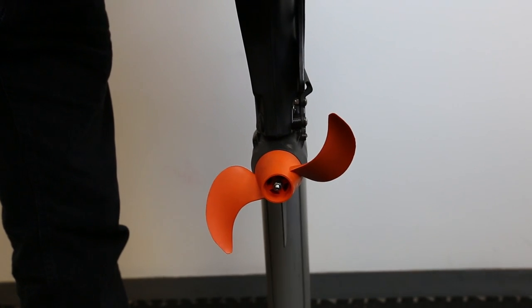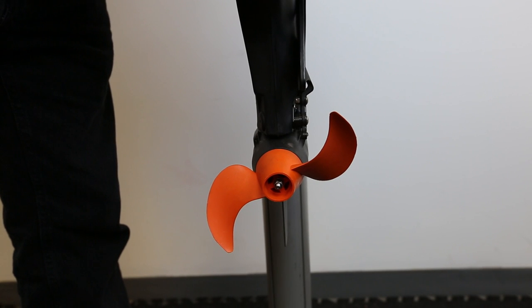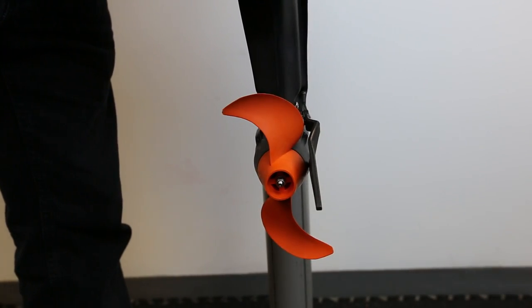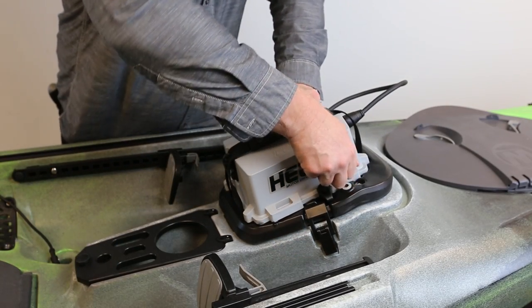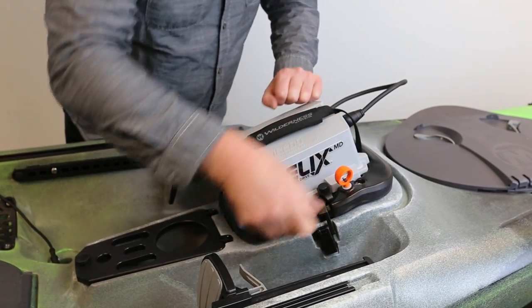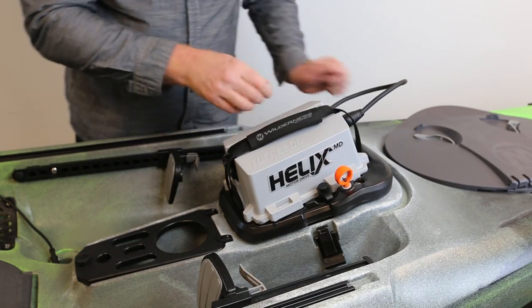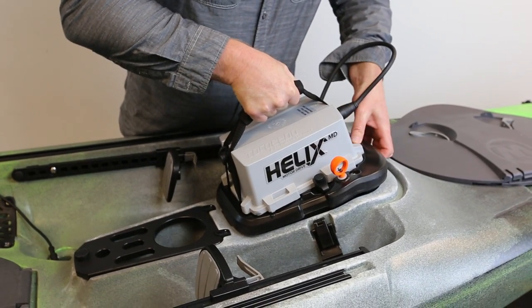It's good to understand the prop alignment. The prop alignment system is designed to align the propeller into the vertical position for removal from the pod scupper. Before removing your helix motor drive system, locate the orange pull ring on the right side of the housing lid. Pull up firmly until it stops.